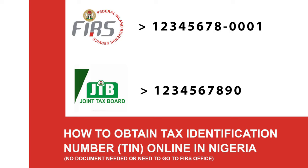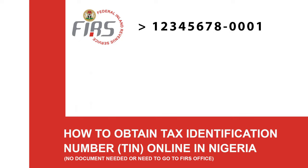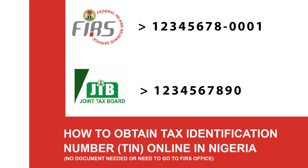FIRS has been the body responsible for giving tax IDs to people. But JTB was created as a combination of different agencies, and they now share the same database. So instead of going to CAC, presenting audit documents, creating your business name, and then going to FIRS to present the same documents just to get a tax number — they made it easier. Once you've registered your business name, all you have to do is apply for a TIN on the JTB website and submit your business name, and because it's a conglomeration of all those agencies, they search through the database.